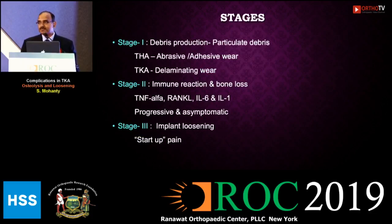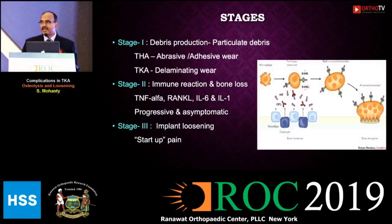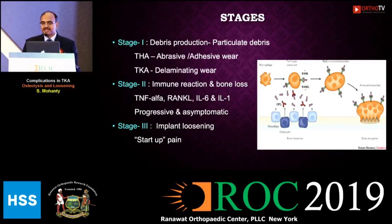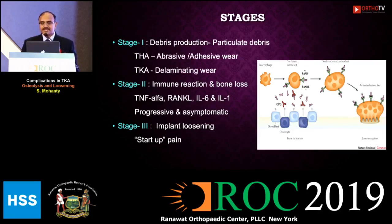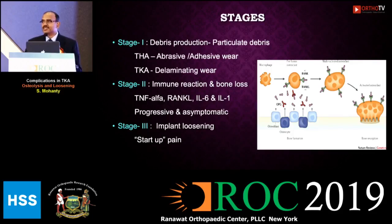In total knee replacement, delamination produces particulate debris. The small particles get engulfed by macrophages, which release mediators of inflammation and immune reaction. In the second stage, bone loss occurs due to release of TNF-alpha, RANKL, interleukin-6, and interleukin-1. These mediators settle on the bone and cause progressive osteolysis.